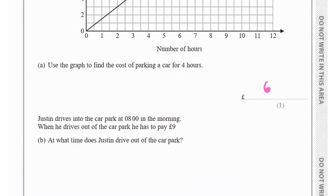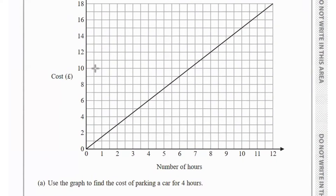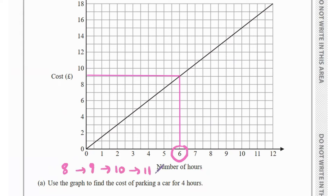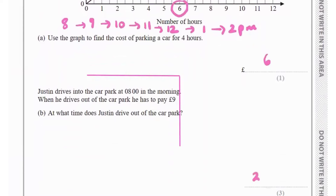Justin drives into the car park at 8 in the morning and has to pay 9 pounds when he drives out. From the graph, 9 pounds corresponds to 6 hours. Starting at 8 a.m. and adding 6 hours: 9, 10, 11, 12 is 4 hours, then 1 p.m. is 5 hours, and 2 p.m. is 6 hours. So Justin drives out at 2 p.m.